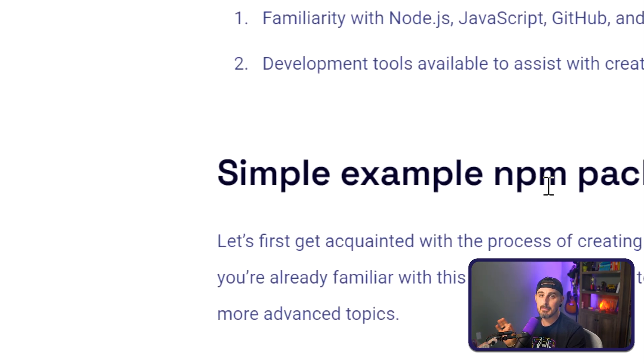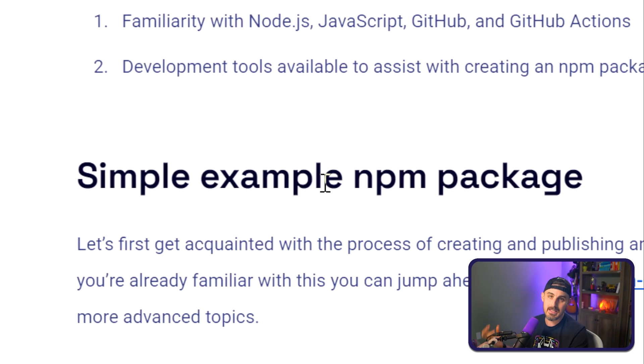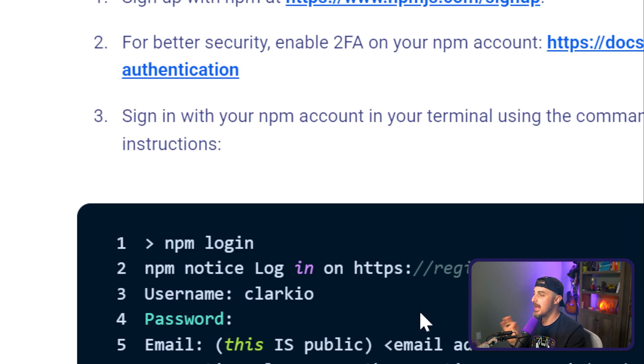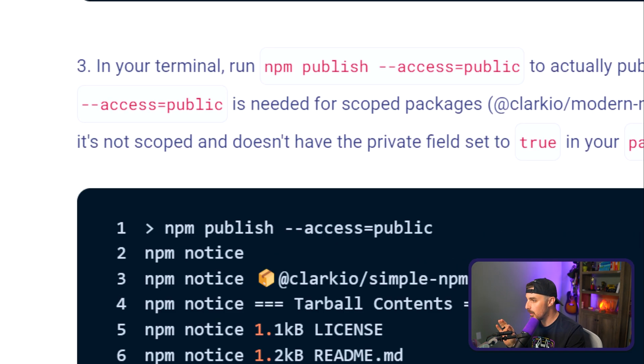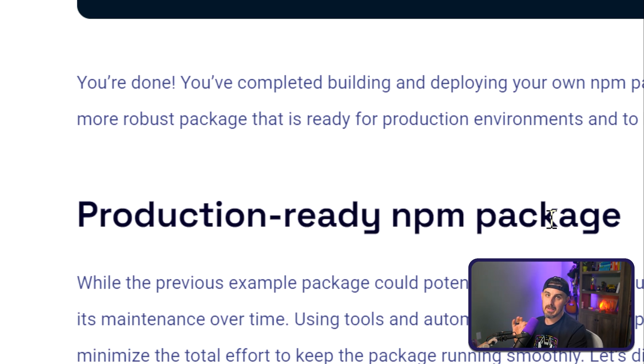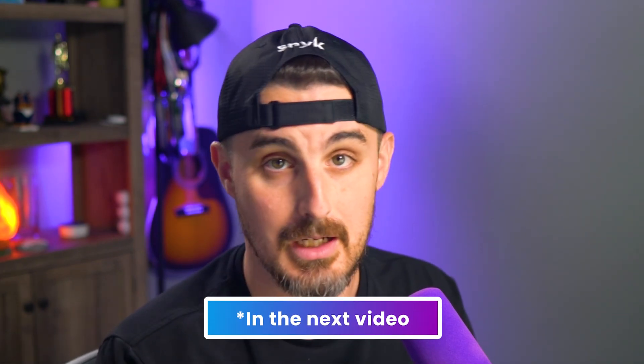We're going to start off with a simple example just to get you acquainted with building out an NPM package, and then after that we're going to go into a production-ready NPM package. You need a more robust solution if you're going to be building something that's out there in the world for others to use — whether publicly available or for your own team — with reliability, efficient updates, and so on. Stick around.